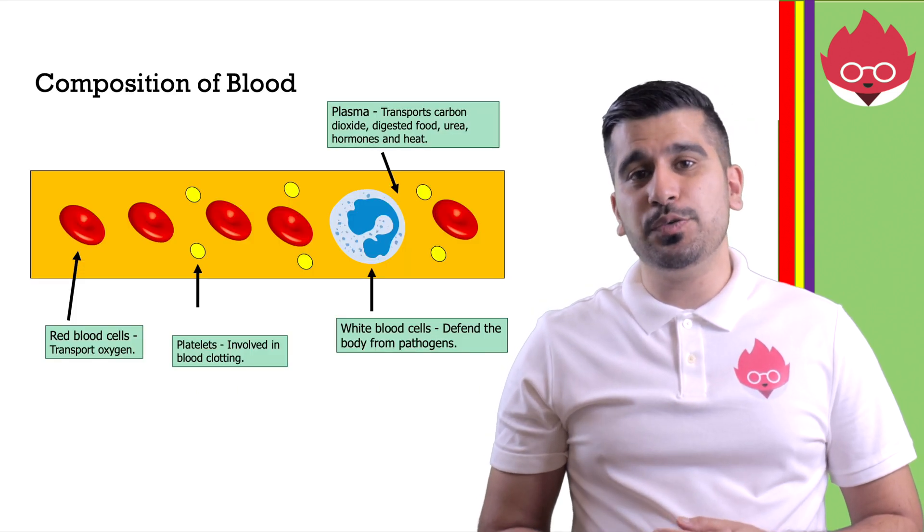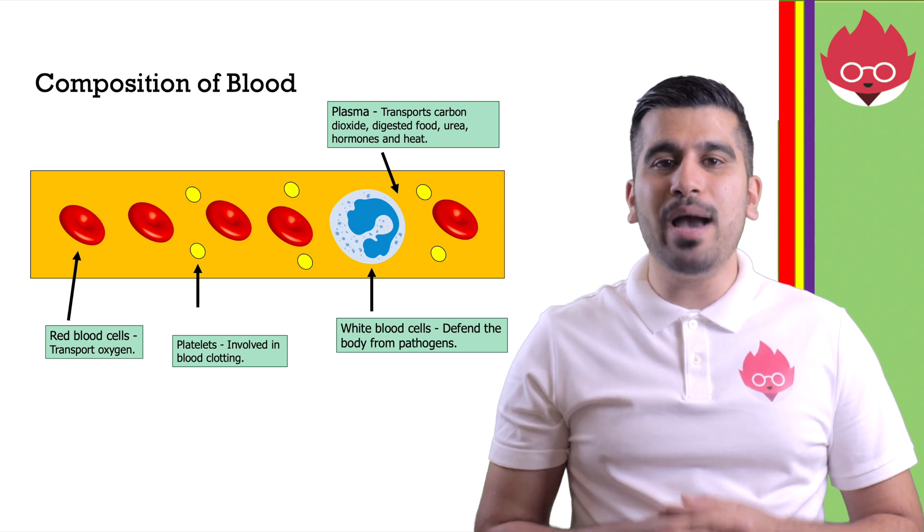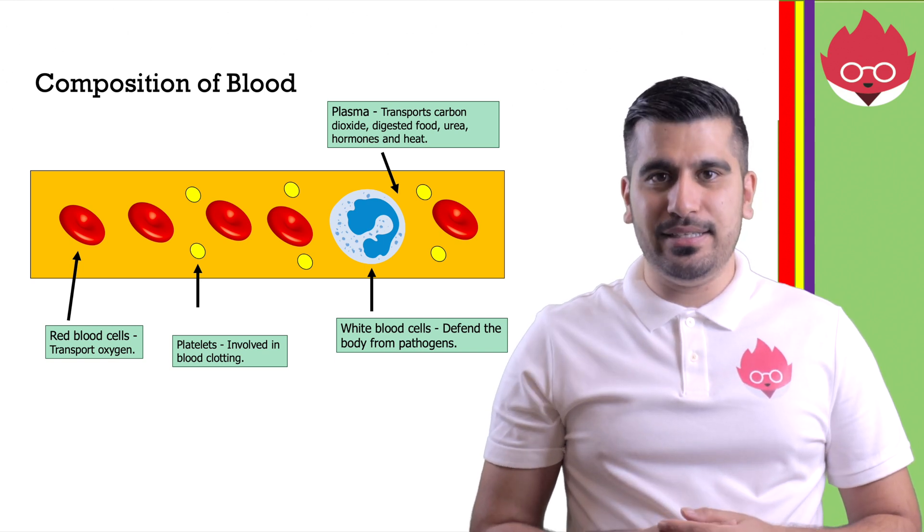The blood is a tissue composed of red blood cells, white blood cells, plasma and platelets.